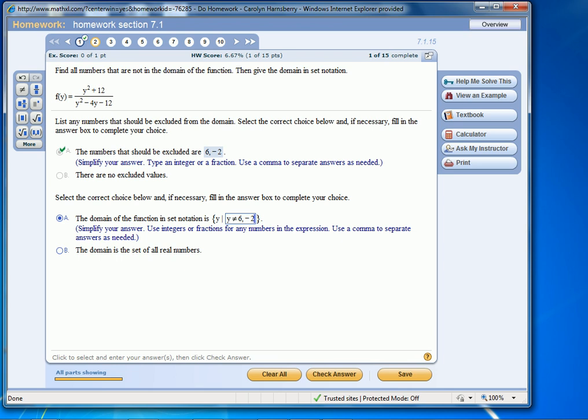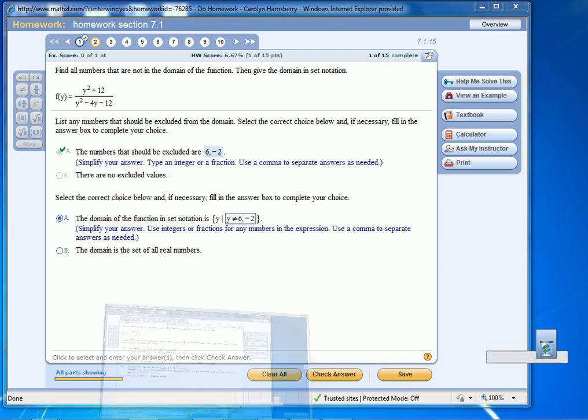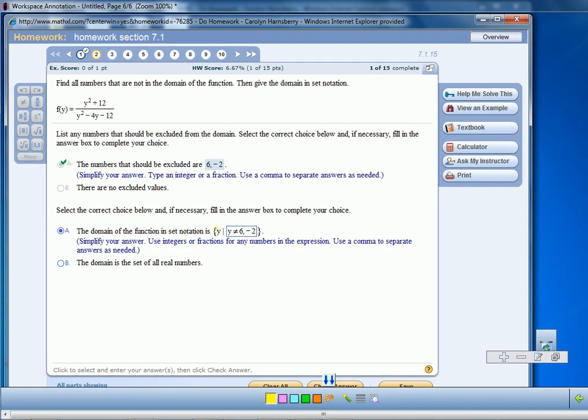Now even though you have a Y written here first, you still have to type the variable again stating that Y cannot equal whichever numbers that are excluded from the domain. So always look out for that.